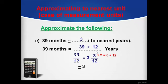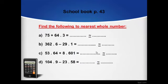Let's move to examples from the schoolbook, page 43: find the following to nearest whole number — remember, nearest whole number means nearest unit. Letter A: 75 plus 64.3. The result is 139.3. To nearest whole number, keep numbers before the units digit the same, then look at the tenths digit, which is 3, a weak number. We do nothing with our units, so we keep 9 the same as it is.